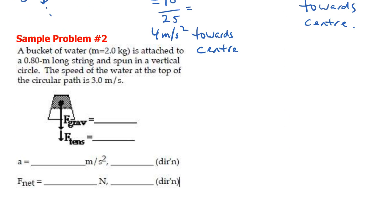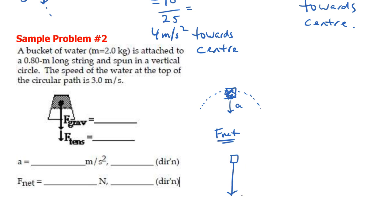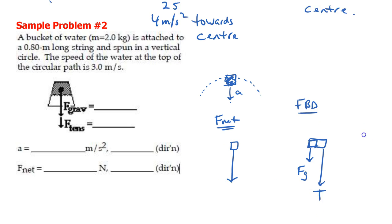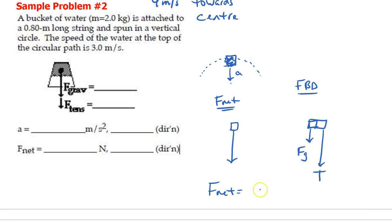Sample two: a bucket of water is being spun around. When it's at the top of the loop, the object is accelerating downward towards the center. Drawing a free body diagram, we have the force of gravity downwards and the tension force also downwards. So F_net must be downward, and it equals the sum of gravity and tension added together.